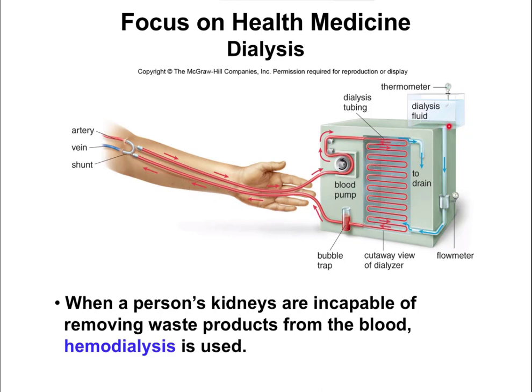In addition, we have this dialysis fluid, which is going to be an isotonic solution that has ions similar to your body. This goes into the whole matrix, which is also put back in your body. This process of hemodialysis is a way to set up an artificial kidney to help filter out these waste products. And this whole process occurs via osmotic pressure and the semipermeable membranes.